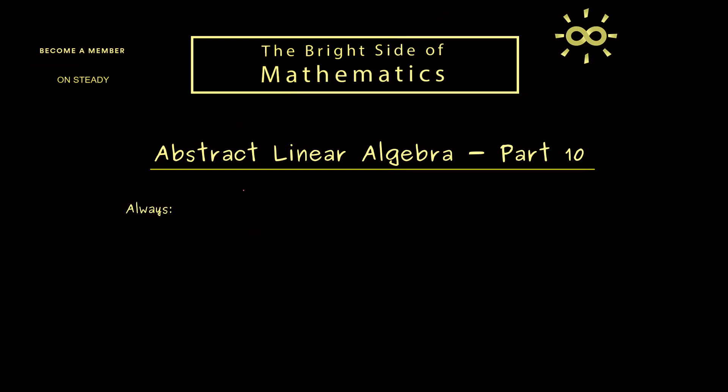Ok then let's immediately start by considering an F-vector space. And please recall, F always represents the real number line or the complex plane. Hence the short notation to write this down is F is an element of this set. And now in order to keep the notation simple we will use the same symbols in both cases.